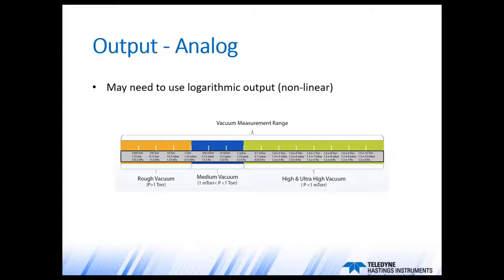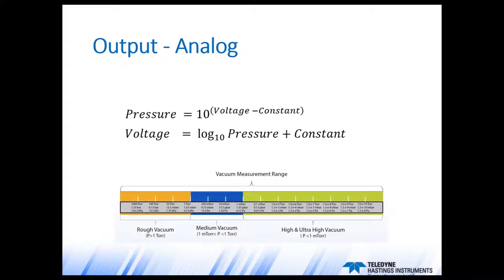For a vacuum gauge covering many orders of magnitude — say a combination gauge from atmosphere to 10⁻⁴ Torr, or atmosphere to 10⁻¹⁰ Torr — a single linear voltage output is not possible. If a full-scale value of 1,000 Torr corresponded to 10 volts, then 10⁻⁴ Torr would produce only 1 microvolt, which would be susceptible to noise. So some gauges provide a logarithmic output. You then take the voltage measurement, combine it with a constant from the manual, do the calculation, and easily convert from voltage to a pressure reading — you can even pop that right into Excel.